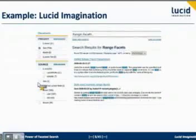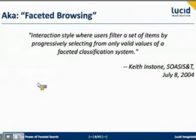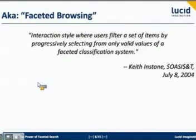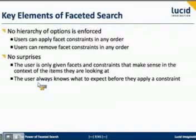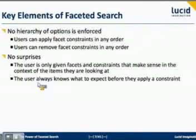So, looking at those examples, let's talk about a definition. The best definition is this one from a guy named Keith Enstone back in 2004. He really clarified that what people mean when they talk about faceted search or faceted browsing is all about the interaction style — giving your users a mechanism for progressively whittling down the set of objects they're looking at based only on the valid values. It really breaks down to two major elements. The first is that there is no hierarchy implied. You're not forcing your users to interact with your data in a set order or a set way — it's not like a Dewey Decimal Classification System. Users can apply facets and constraints in any way that they want.